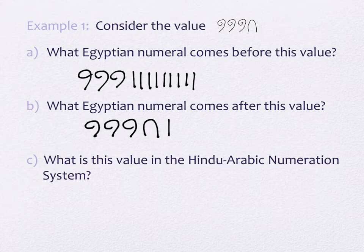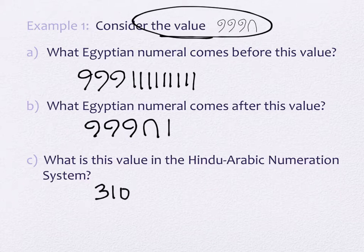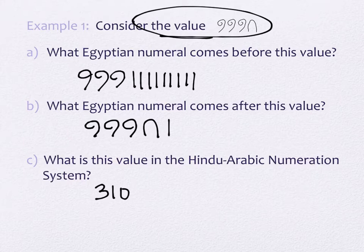Question C asks: what is this value in the Hindu-Arabic numeration system? The original value is 310 — scrolls are worth 100 each, so three scrolls gives 300, and the heel bone is worth 10, giving 310 total.